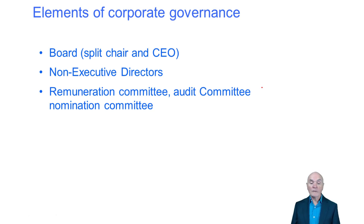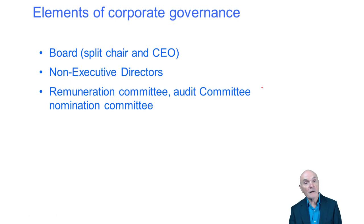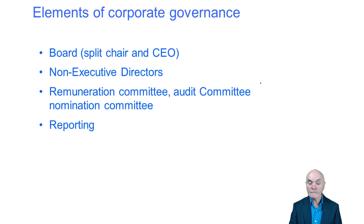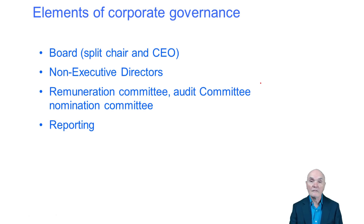The non-executive directors form a number of subcommittees: the remuneration committee looks after the pay of the directors, the audit committee looks after relationships with both internal and external auditors, and the nomination committee looks after the appointment of new directors. The proper approach is to advertise and get the best person, rather than the old system where directors would appoint friends or acquaintances as well-behaved but less-skilled directors. There is also a requirement to report to shareholders that corporate governance has been properly fulfilled.